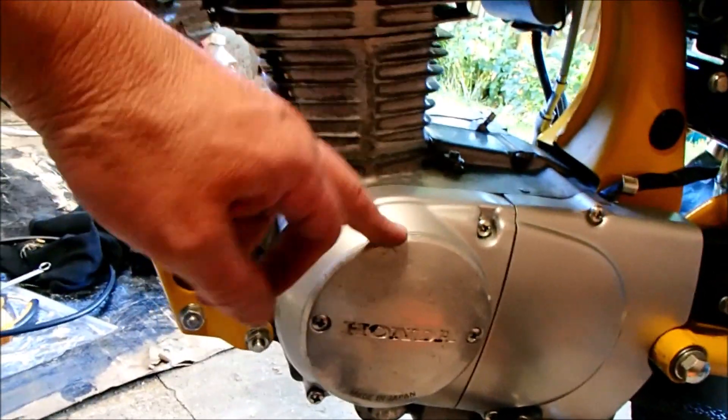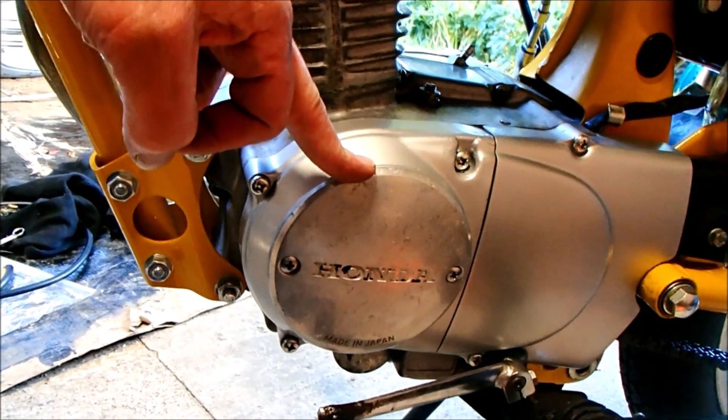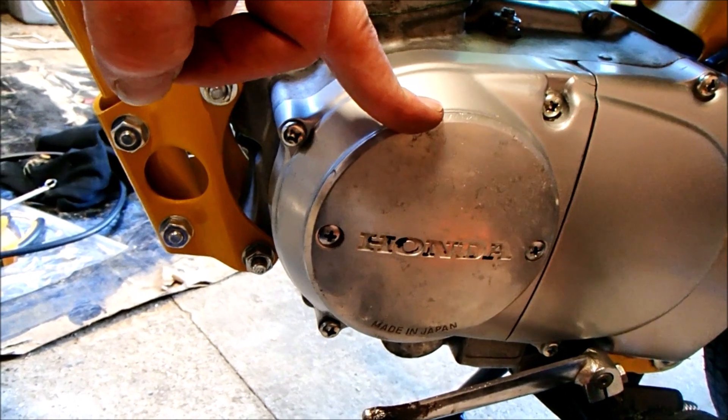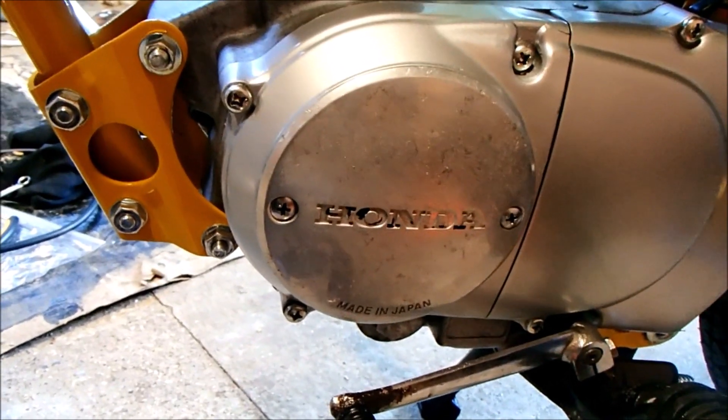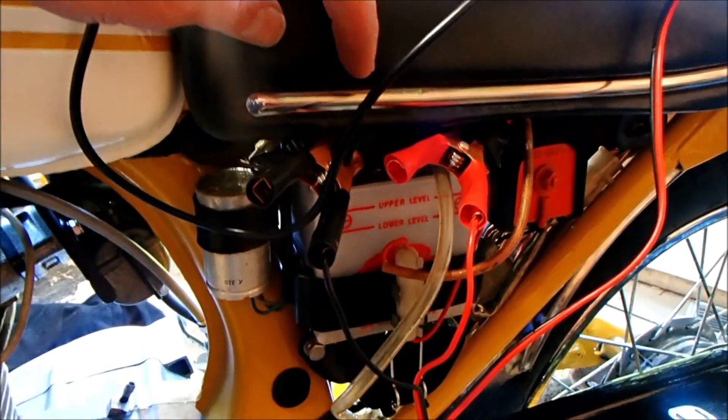We need to remove the generator cover, and under there it will reveal the flywheel which will have the timing markings on it. We're hoping to check that the fire mark lines up with the little marker on the case so that we know that it's firing at the right point.